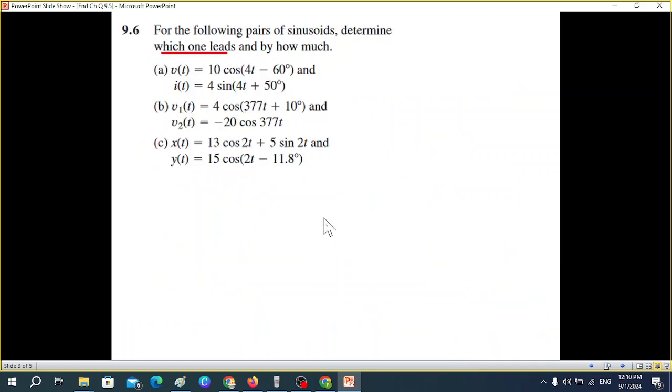Okay, let's go to the next question. This has three parts: part A, B and C. We'll deal one at a time. So let's take the first part. You can see here also we have a cosine and sine, so we have to convert the sine signal into cosine.